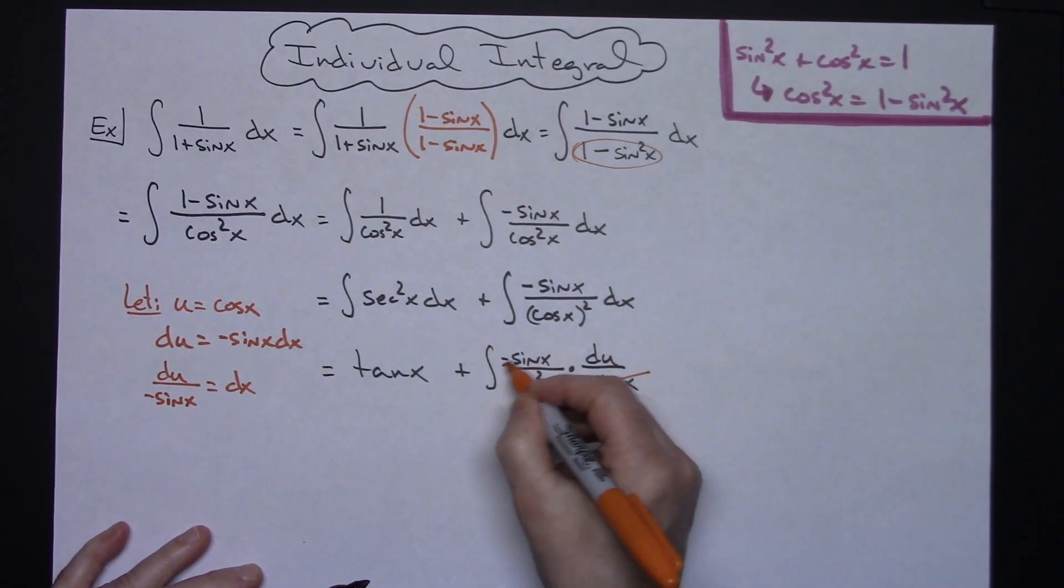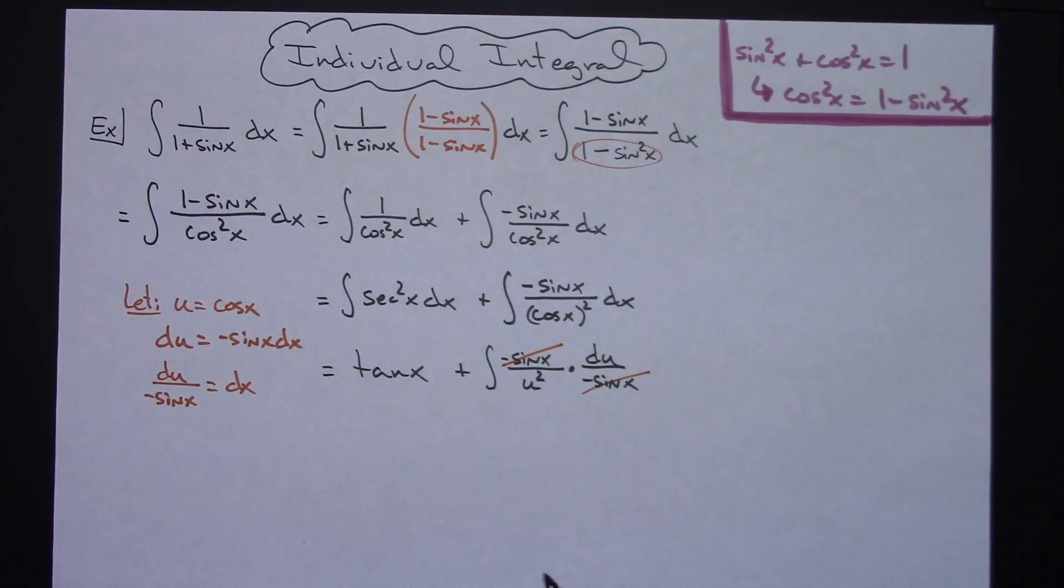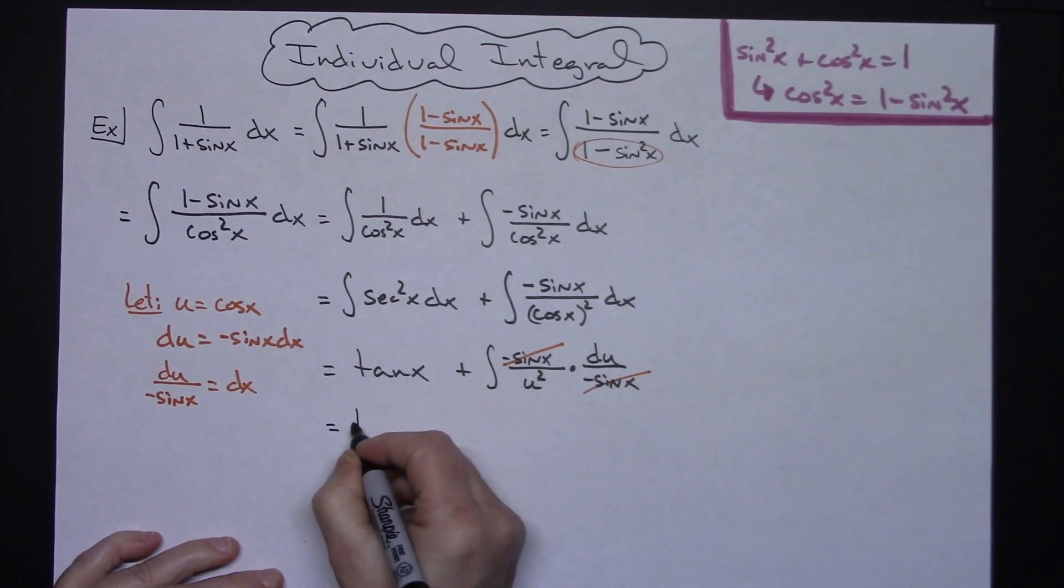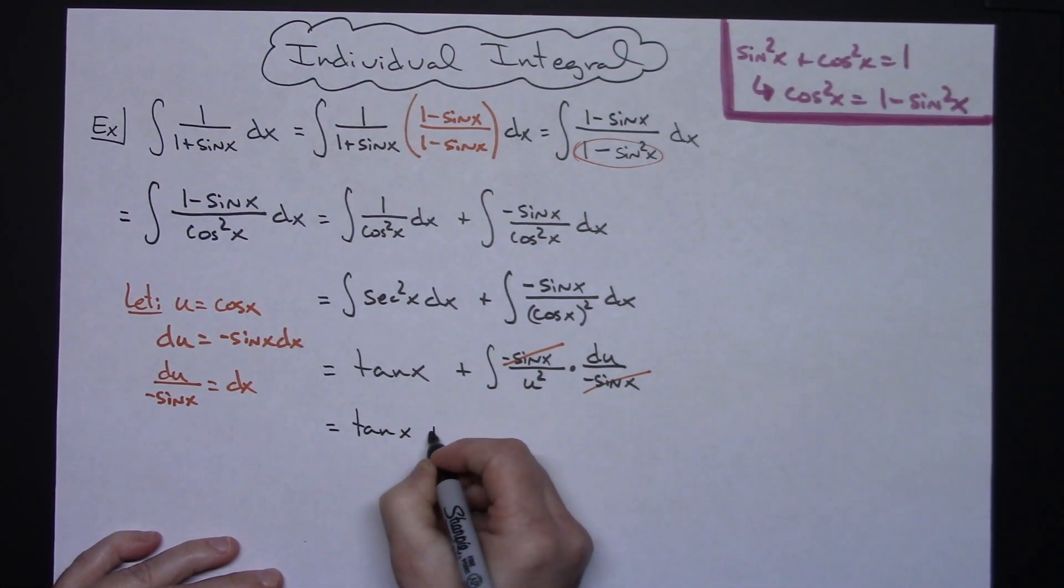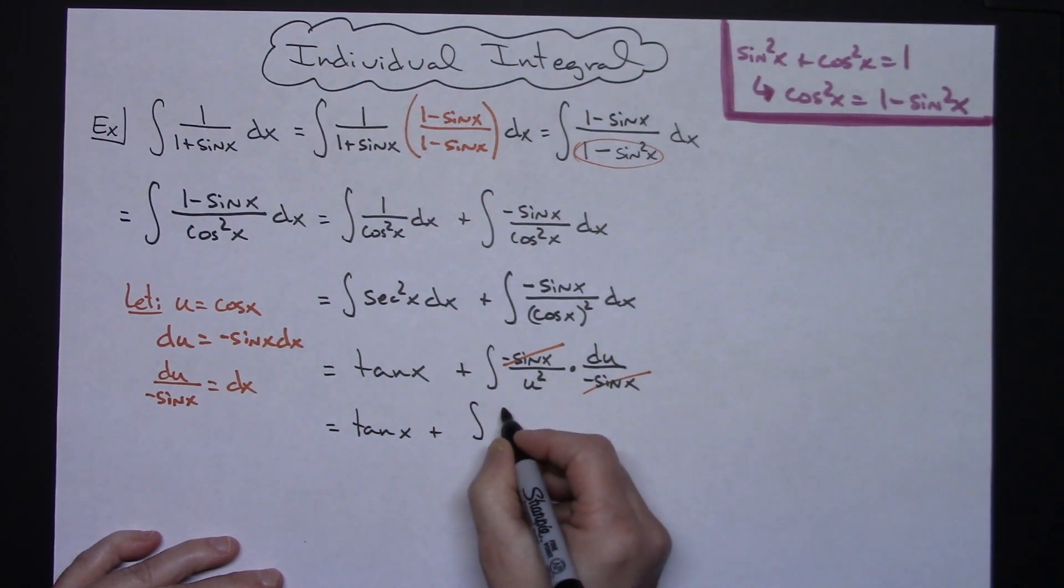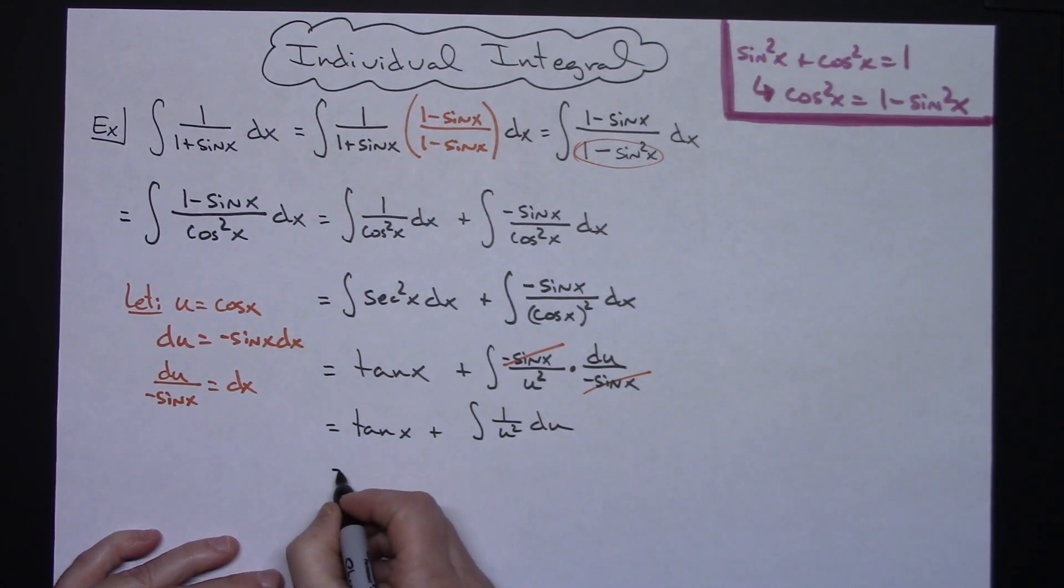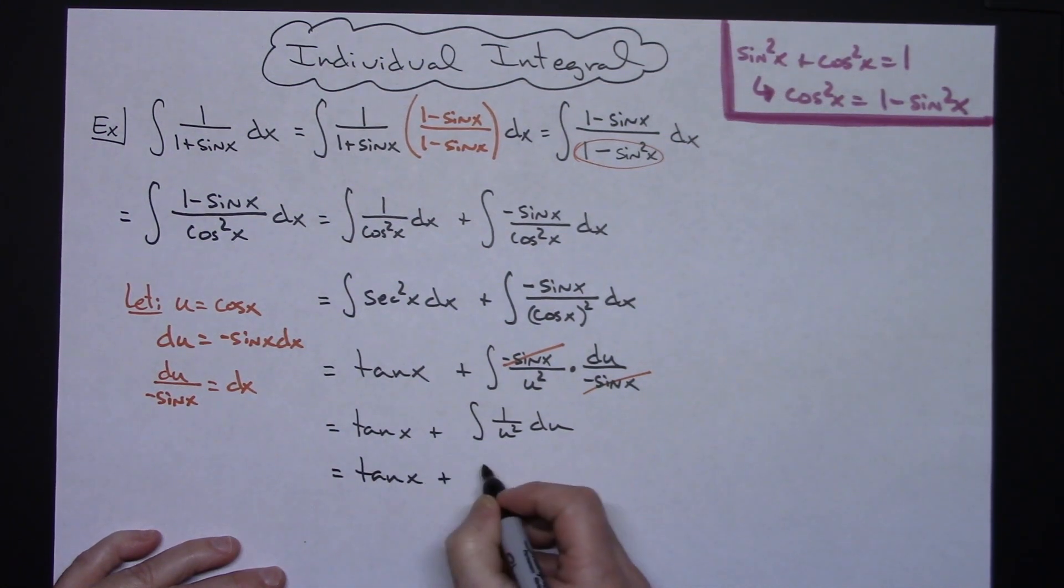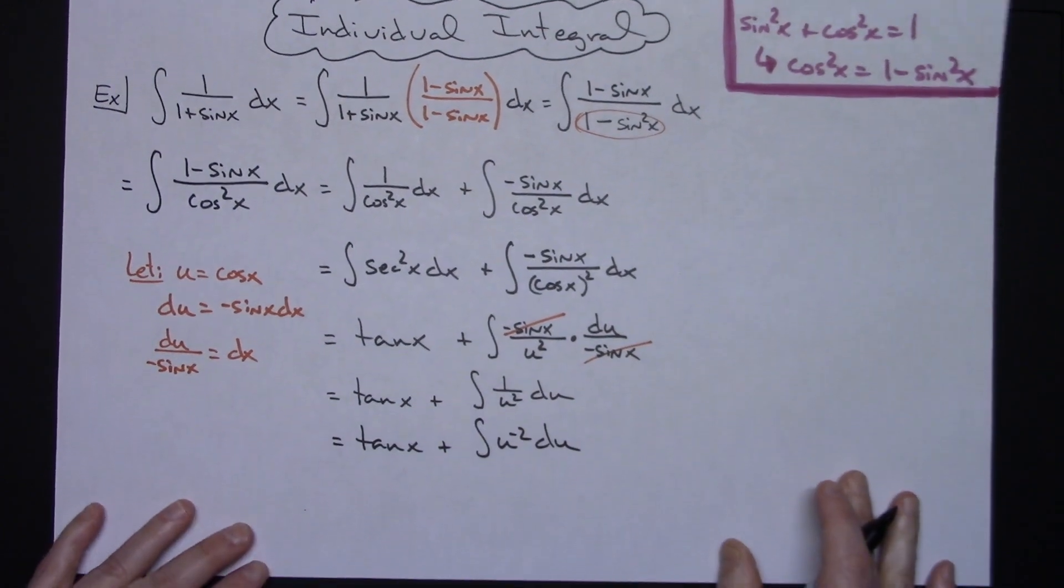All right and then that sets up really nicely for letting those minus sine x's cross out I'm still going to have a tangent x here. Simplifying I'm going to have a 1 over u squared du. The easiest way to integrate that would be to move that up to the numerator with those laws of exponents making it negative so then I'll have the tangent x plus the integral of u to the negative 2 du.